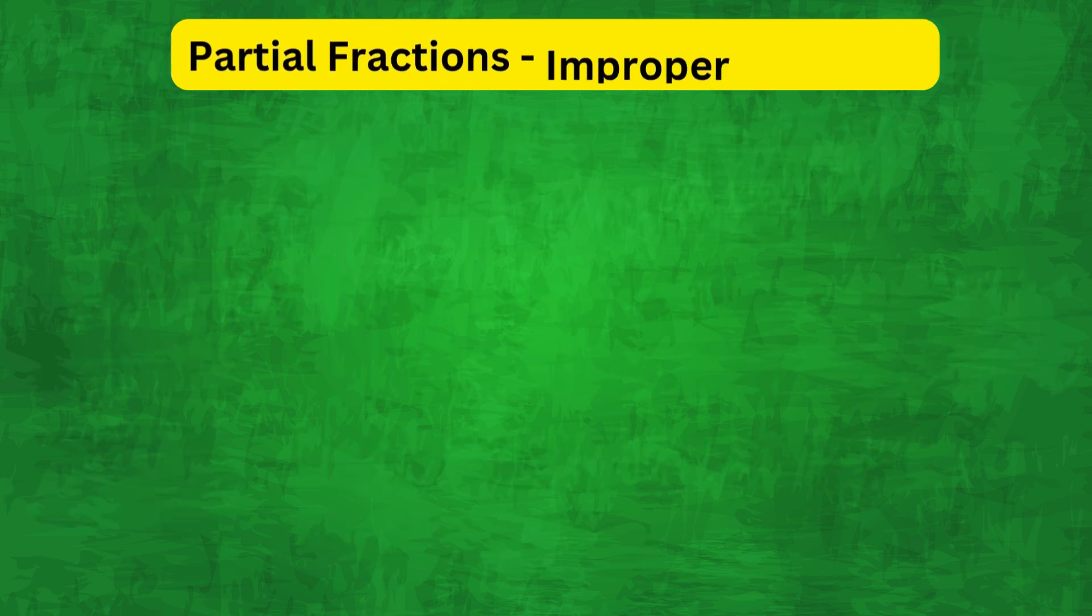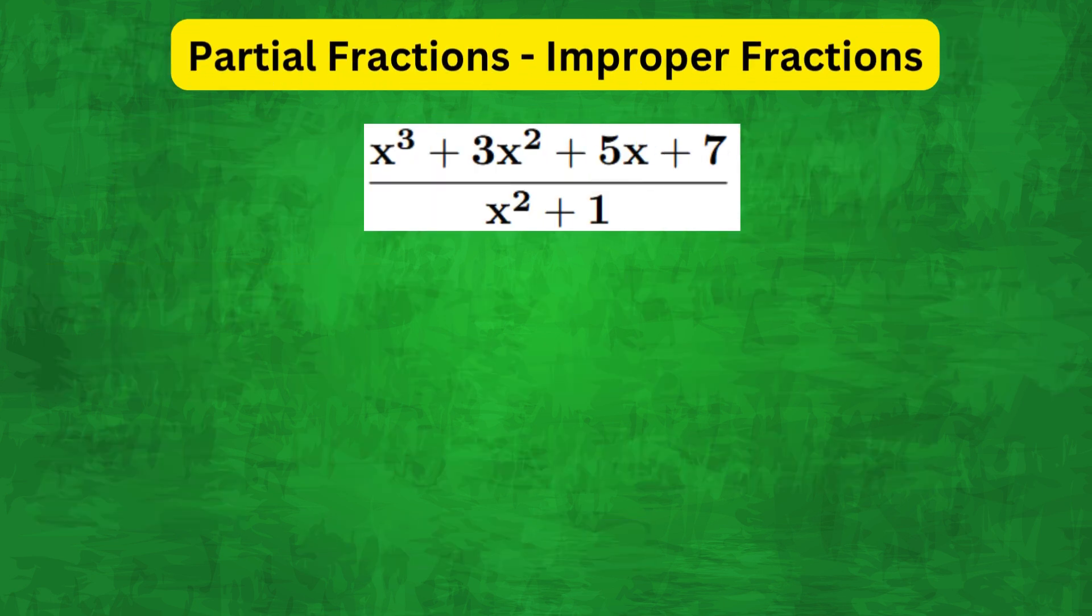Finally we look at improper fractions. In this case the degree of the numerator, i.e. the highest power of x, is the same or greater than that of the denominator as shown here. So we first need to divide the polynomial to make it a proper fraction.